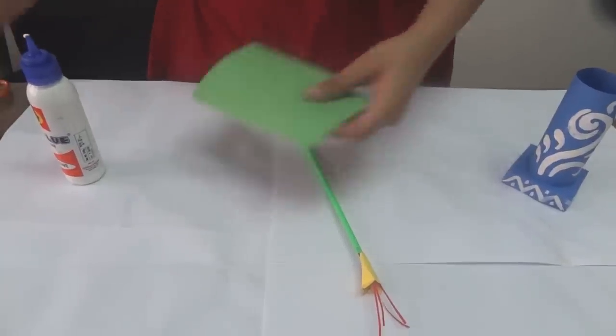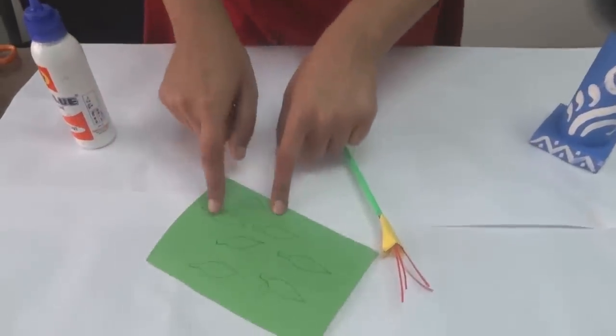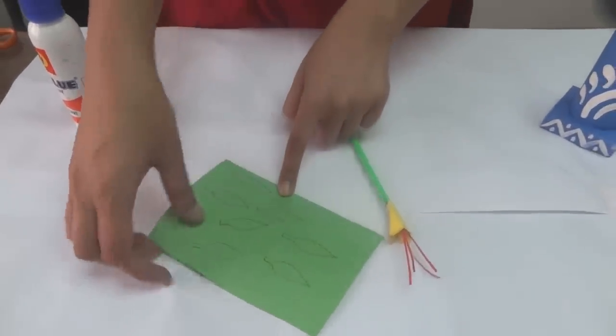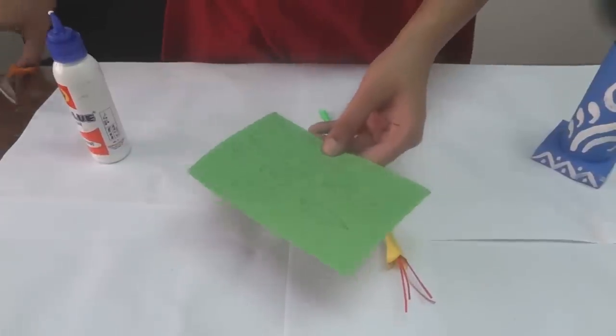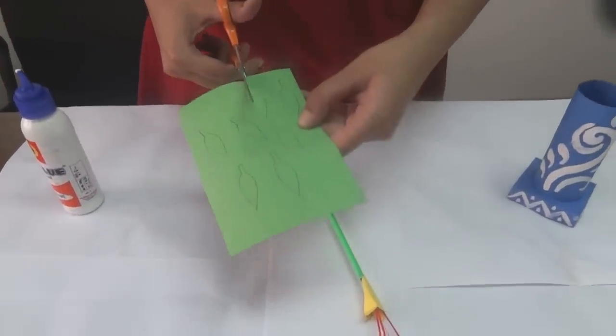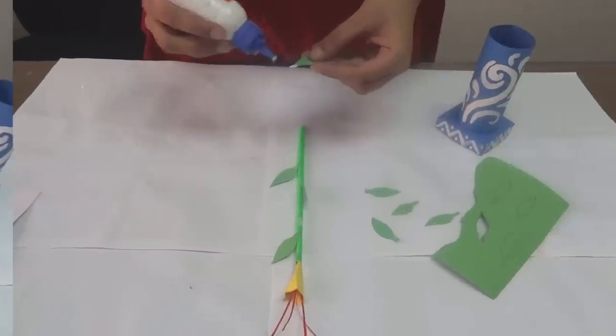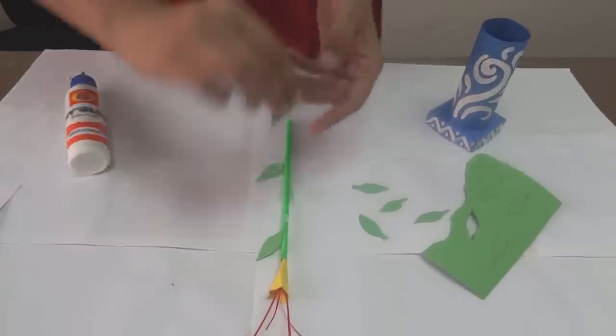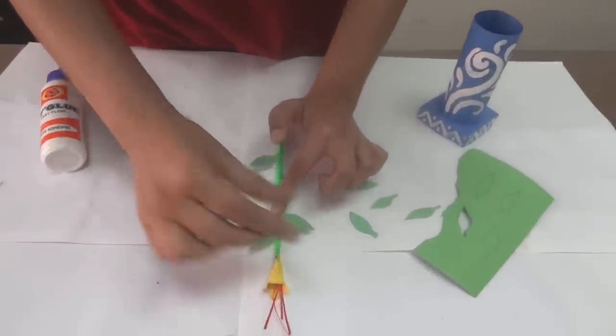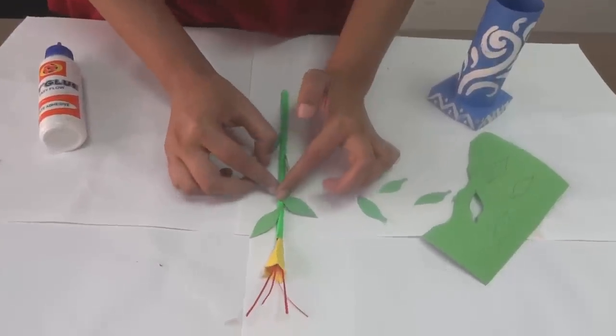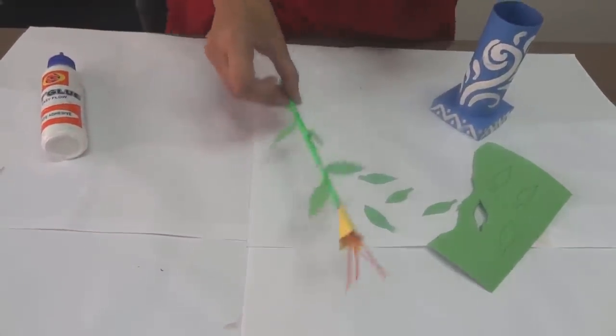All that we are left with is the leaves for the flower. Now see, we have drawn the leaves on the green sheet. Just cut these leaves out. Cut out all the leaves and paste these leaves on the stem of the flower. Like this. And your flower is ready.